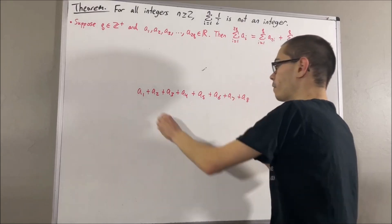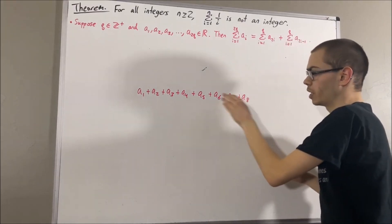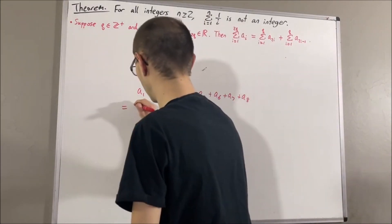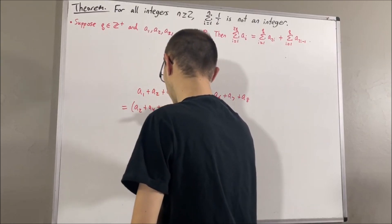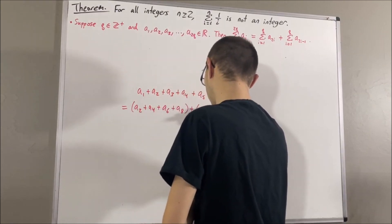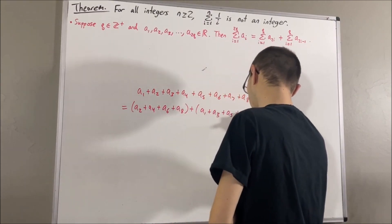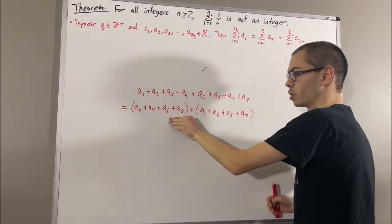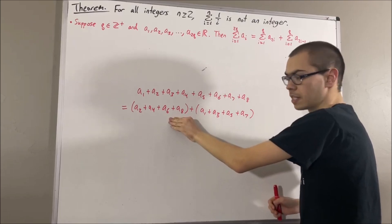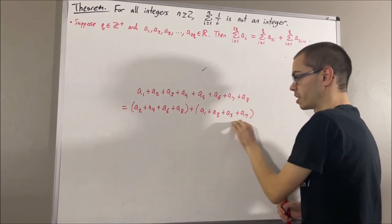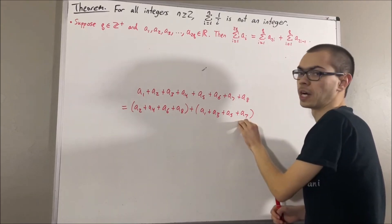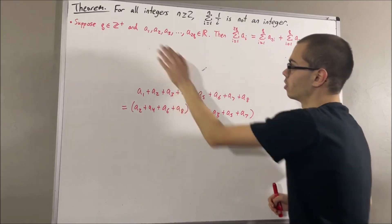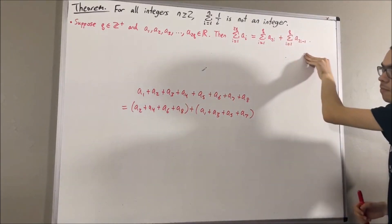If we have a sum of 8 real numbers, then we can re-express this as follows. We can re-express it as the sum of the real numbers with an even index plus the sum of the real numbers with an odd index. That's really all that this result is telling us.